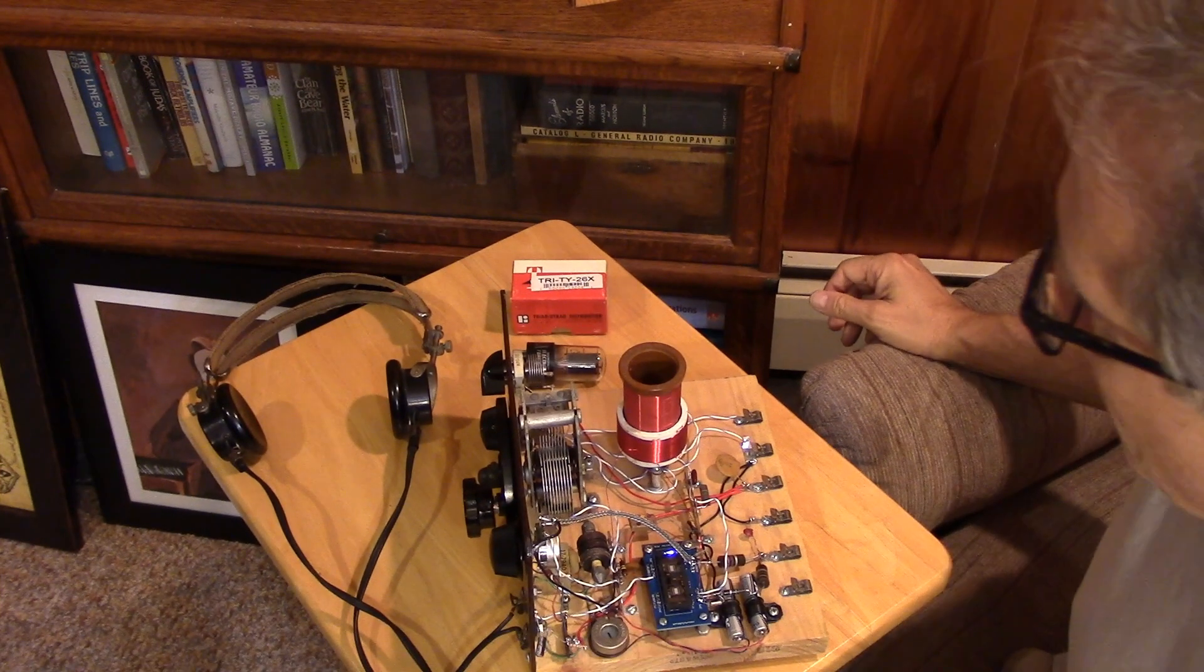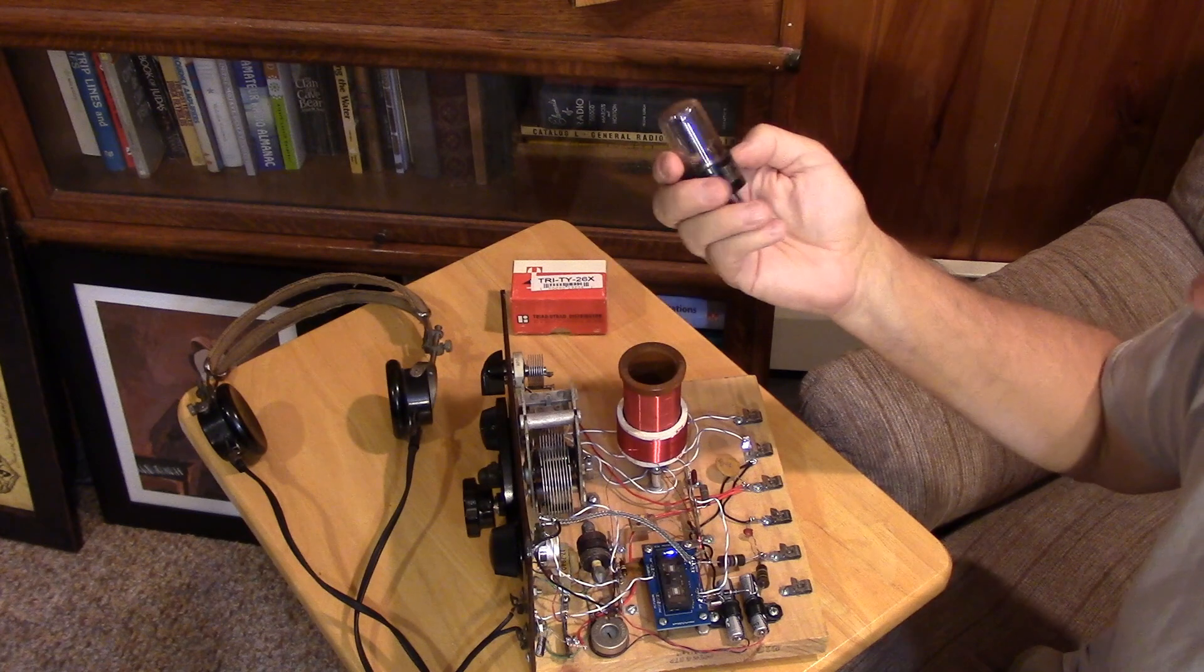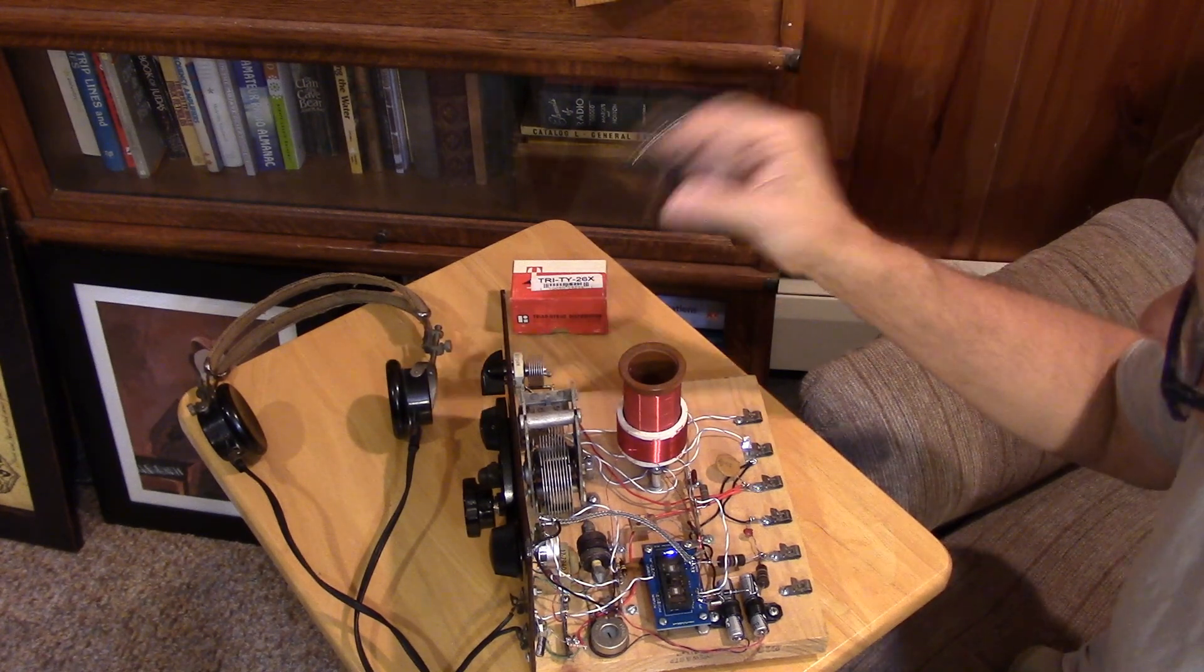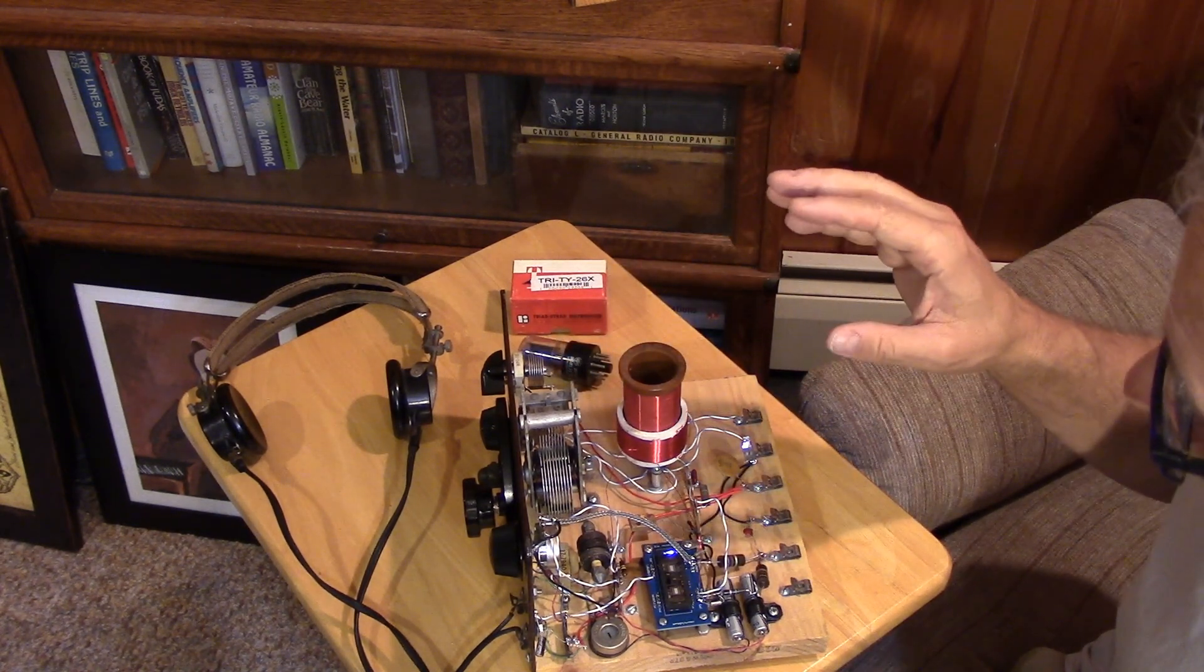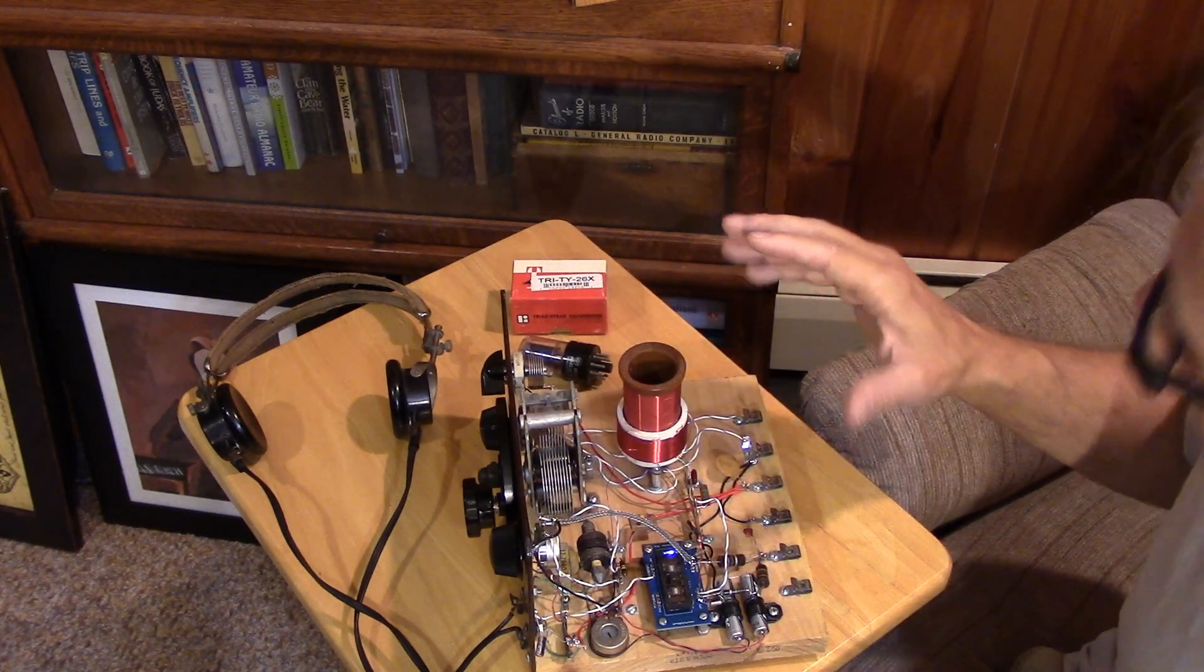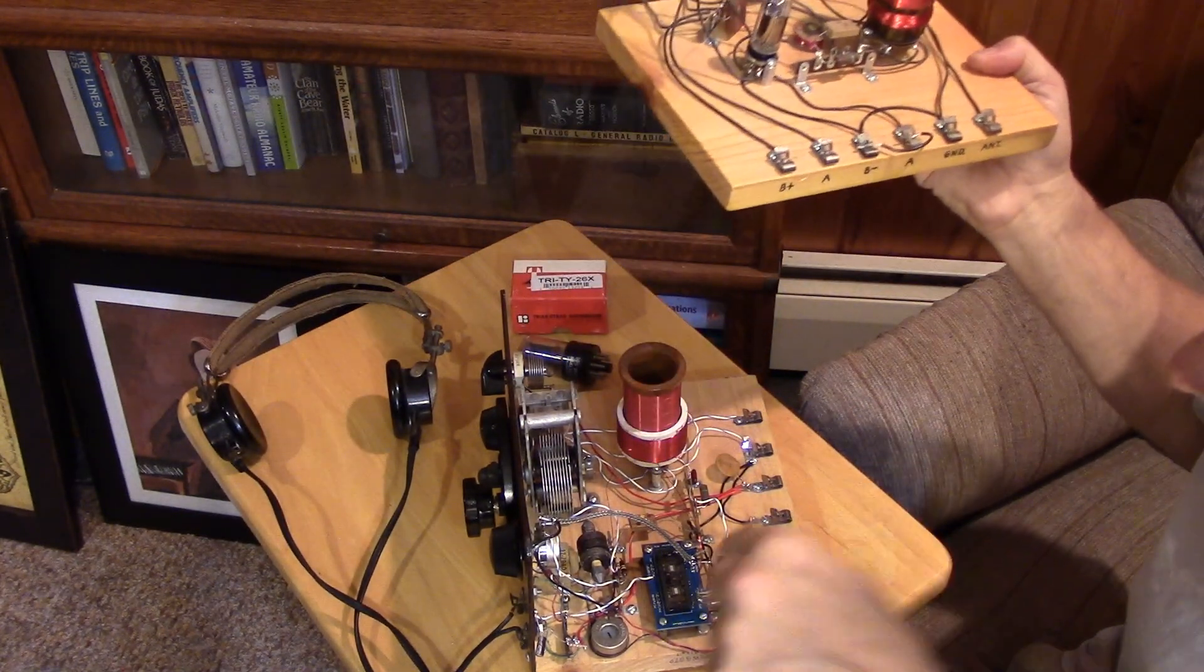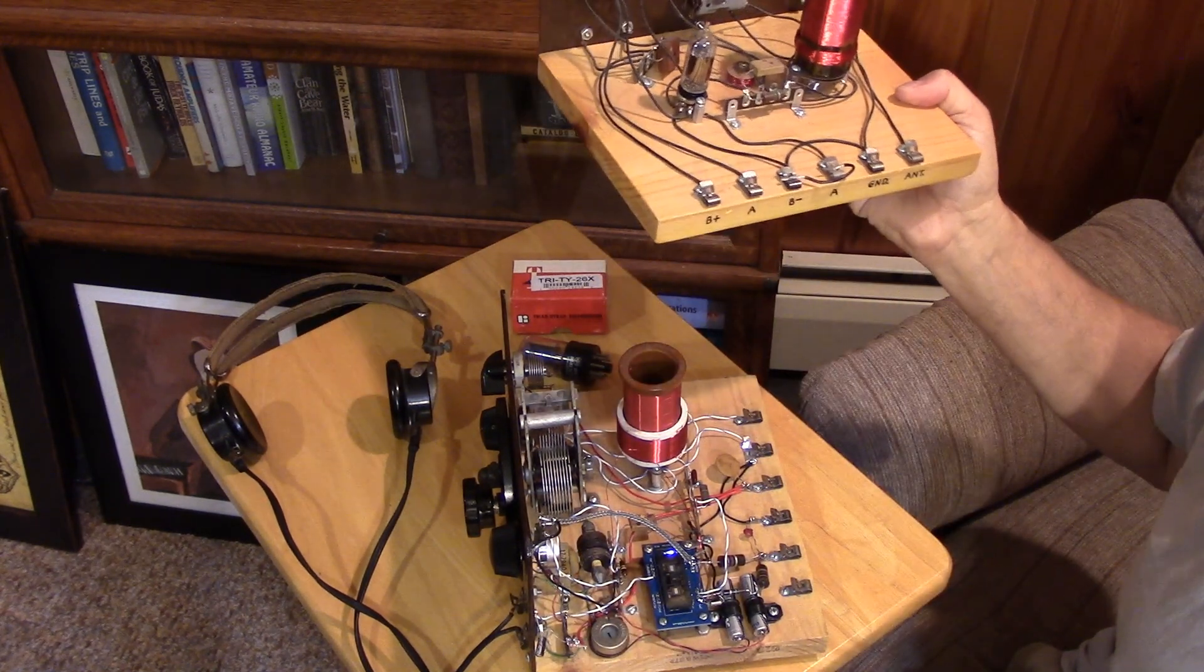In summary, is the Korg new tube ever going to replace a 6SN7? Absolutely not. It just does not have enough gain bandwidth compared to a real dual triode like a 6SN7. In fact, I'm going to say that maybe from VLF frequencies up to the AM band, it might equal the performance of the single tube Morgan receiver. That's how much less gain the Korg new tube has compared to a real vacuum tube.